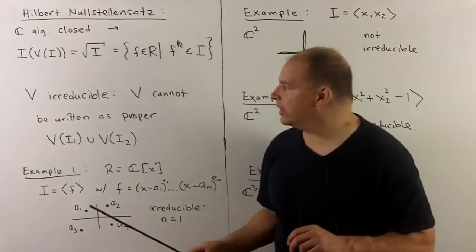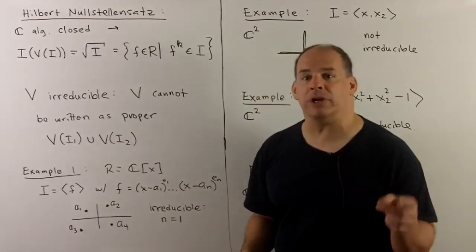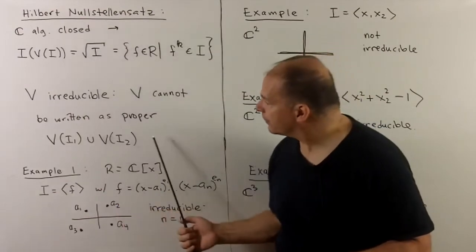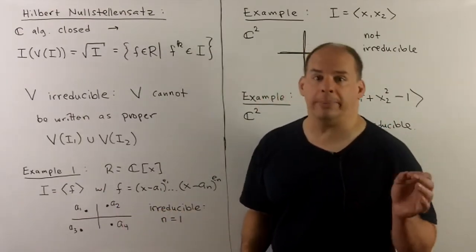One more definition, we'll say a variety V is irreducible, and V cannot be written as a proper union of two other varieties. So when we draw the picture for V, there will only be one piece.